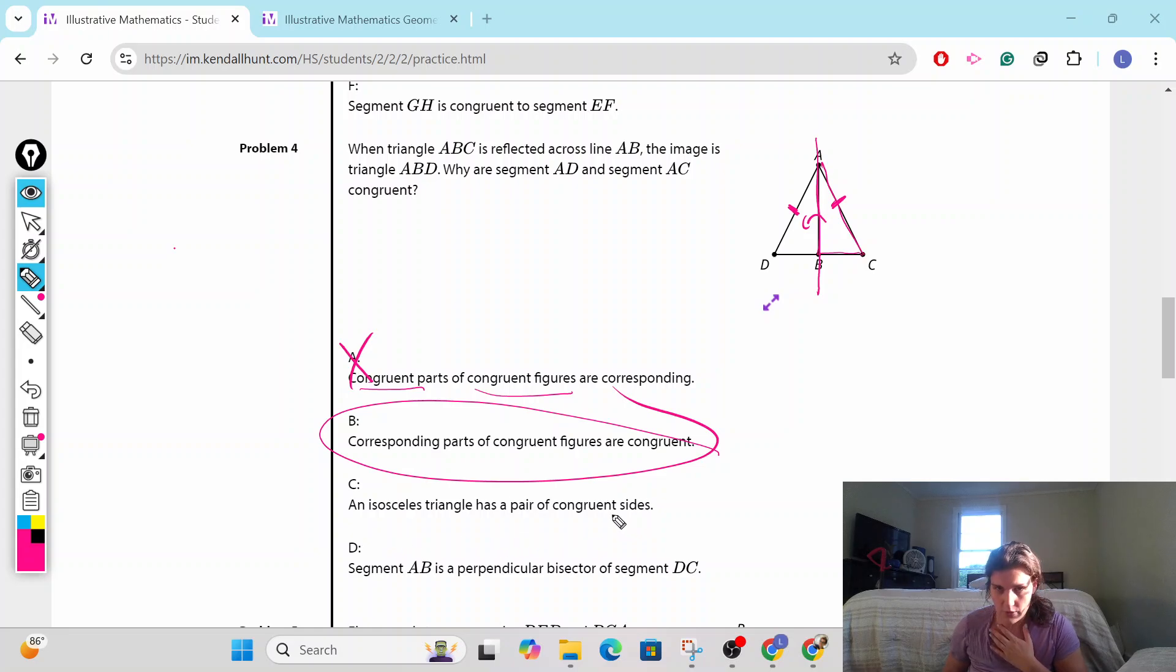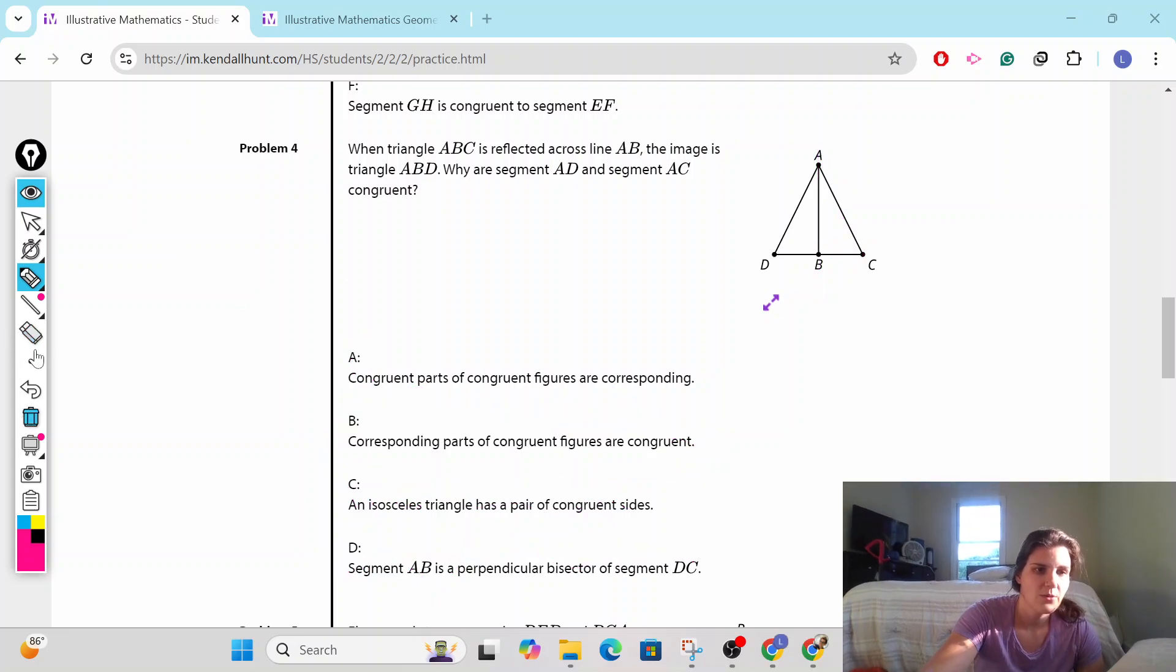An isosceles triangle has a pair of congruent sides. Yes, that's true. Yes, this is an isosceles triangle, but we know it is because it's a reflection because the corresponding parts are congruent. That doesn't give us the why. Segment AB is a perpendicular bisector of DC. That tells us nothing about the sides we want to look at. Alright, that one was easy. Let's go on to the next one.